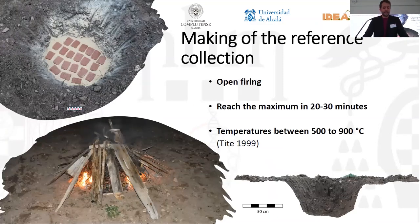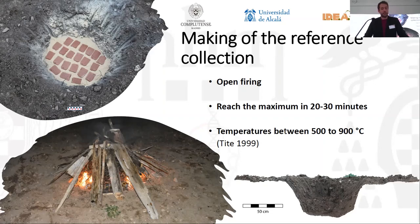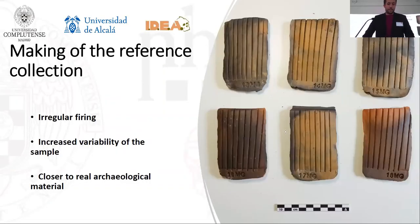The firing of the clay slabs was carried out in a pit kiln, widely documented in traditional communities, for example in North Africa, and extensively studied in the prehistoric period. The 72 slabs were placed inside the pit in levels intercalated by sawdust. On top of it, we placed a large fire with oak wood in order to reach the necessary temperature for firing the clay, between 500 and 900 degrees. This type of kiln generates ceramic with irregular firings, very typical of the late prehistoric period, which improves the variability of the sample and brings it even closer to real archaeological material.